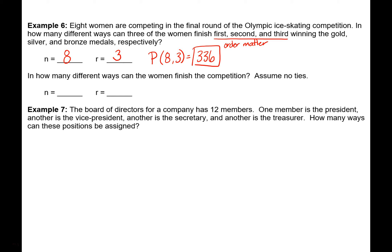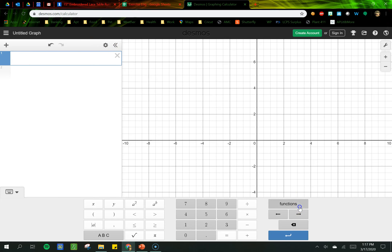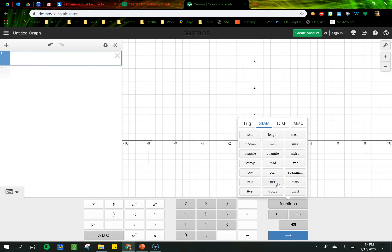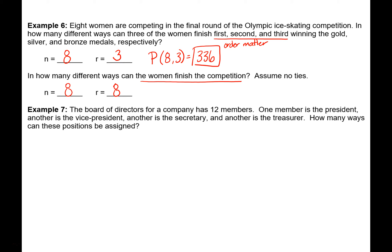Now let's look at a slightly different question: in how many different ways can the women finish the competition, assuming no ties? We're still working with eight women, but this time we care about how all of the women finish — so we're choosing all eight. Order matters here because we're finishing a race, so we choose a permutation. In Desmos, I put in 8 comma 8, and the result is 40,320 — that's how many possible ways they could finish the race.